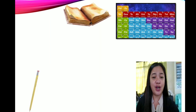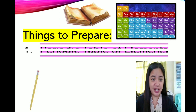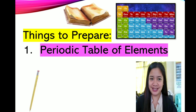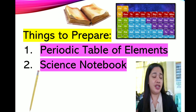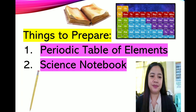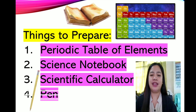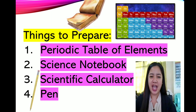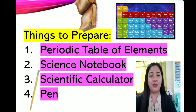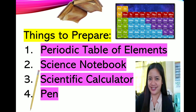First, we are going to prepare: the periodic table of elements, your science journal notebook, your calculator or scientific calculator, and a pen. So if you are ready with the things that you need to prepare, let's start our lesson.